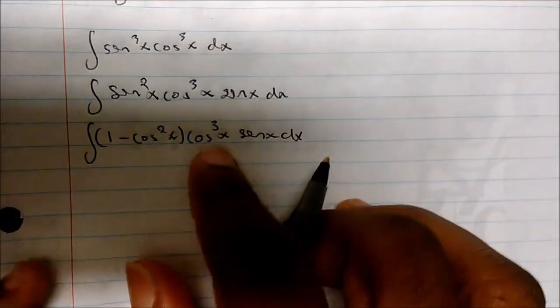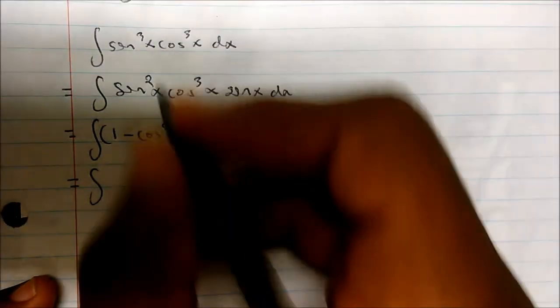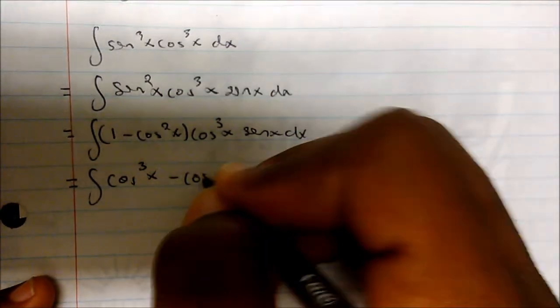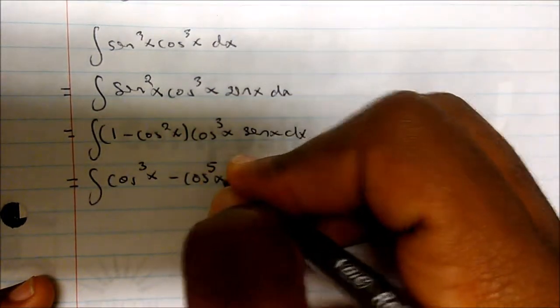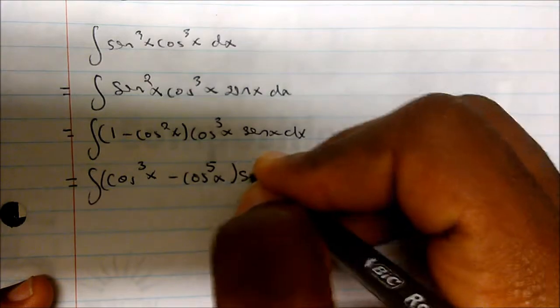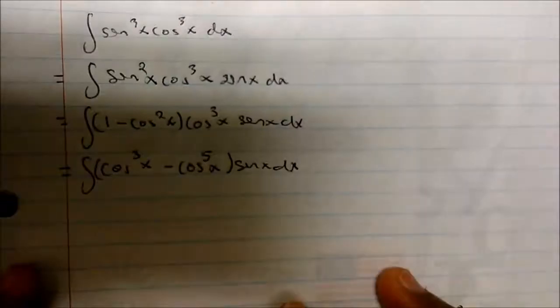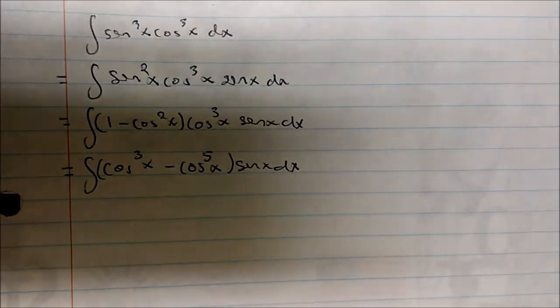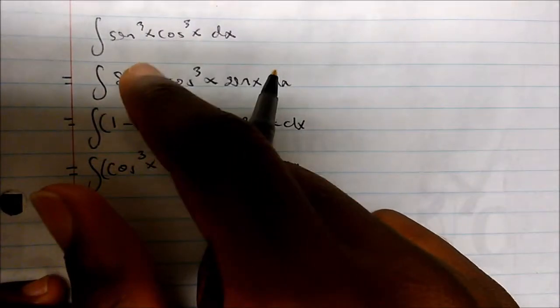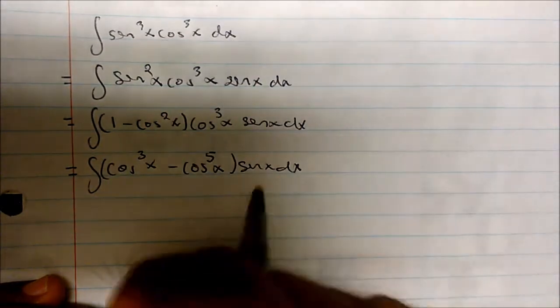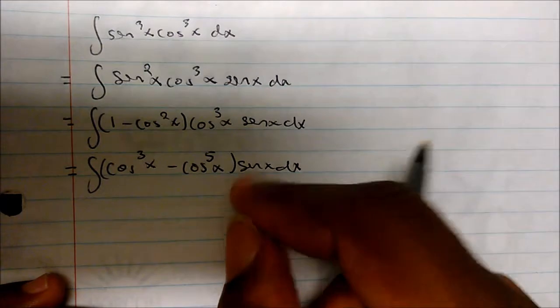If I distribute now, this becomes the integral of cosine cubed of x minus cosine to the fifth of x — since we have the same base we add exponents, 3 plus 2 equals 5 — and we still have our sine of x dx out here. The only thing I did was borrow one and then use the identity, because I want to get everything else in terms of cosine.